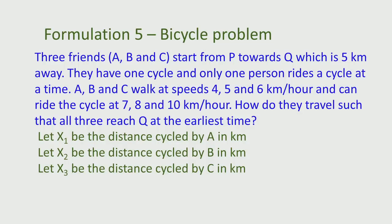With this assumption, we start formulating the problem. Out of the total distance of 5 kilometers, let person A ride a distance x1 on the cycle, person B ride x2, and person C ride x3. This means person A walks 5 − x1, person B walks 5 − x2, and person C walks 5 − x3. So x1, x2, x3 represent the distances cycled by A, B and C respectively.